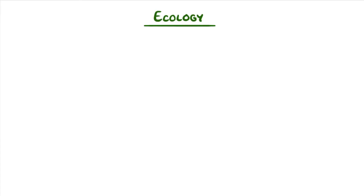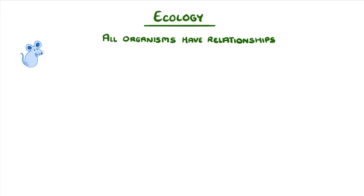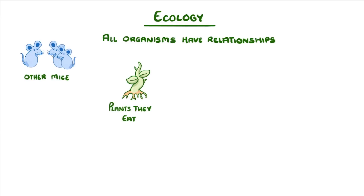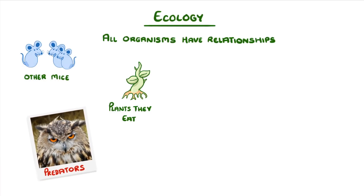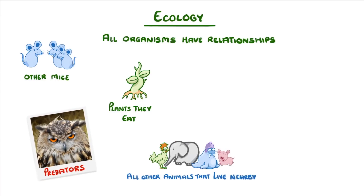The key thing to understand in ecology is that all organisms have relationships. For example, mice have relationships with other mice, with the plants that they eat, with the predators that eat them, and with all of the other animals that live nearby.